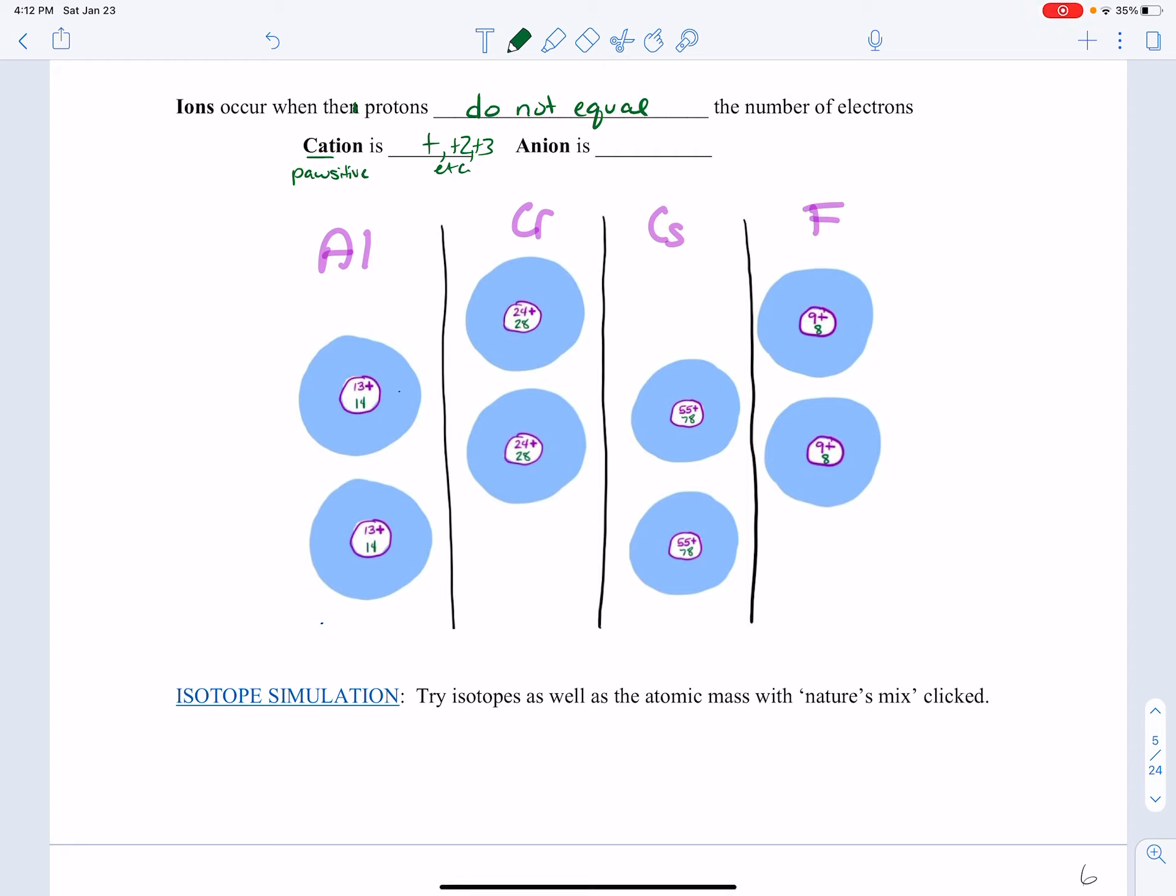An anion has an N in it. It is negative. And again, it could be a negative one, negative two, negative three. I'm just saying that it's some kind of negative.